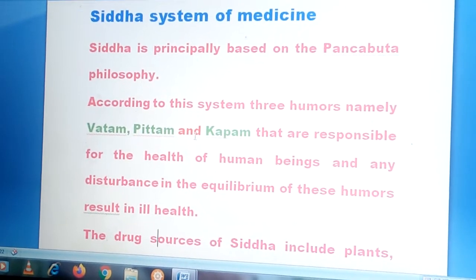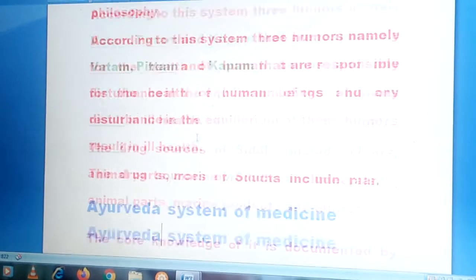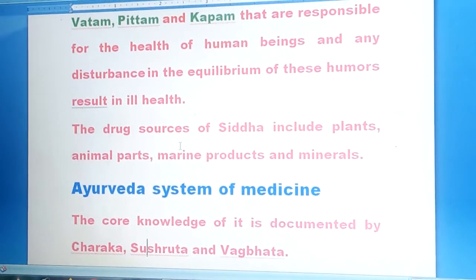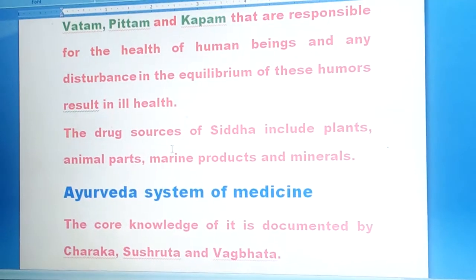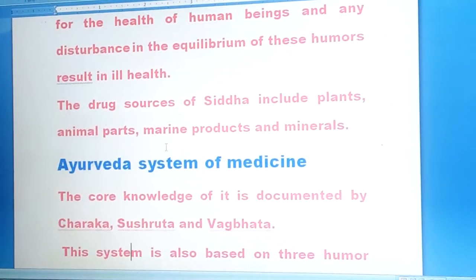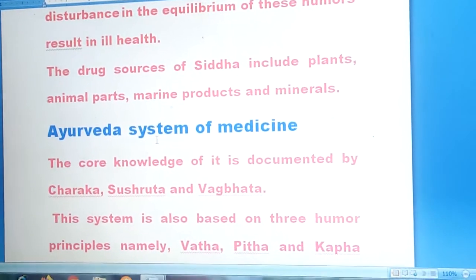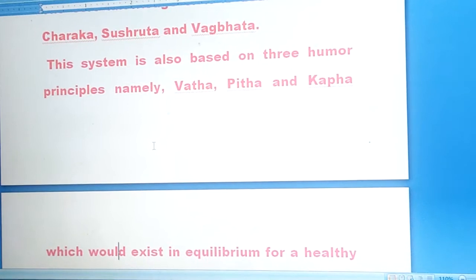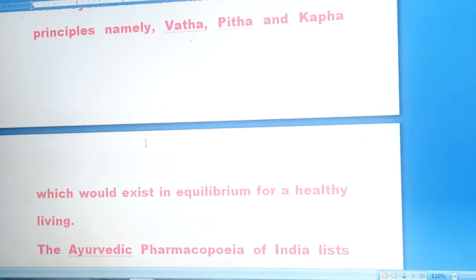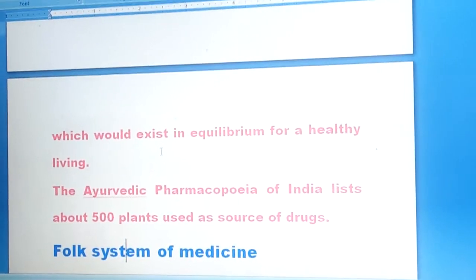The drug sources of Siddha include plants, animal parts, marine products, and minerals. In Ayurveda system of medicine, the core knowledge is documented by Charaka, Sushruta, and Vagbhata. This system is also based on three humoral principles — Vatham, Pitham, and Kabam — which should exist in equilibrium for healthy living. The Ayurvedic pharmacopoeia of India lists about 500 plants used as a source of drugs.